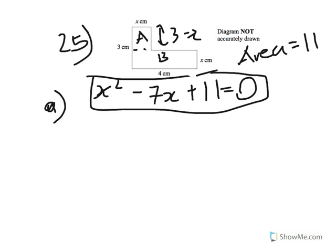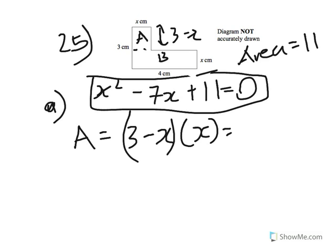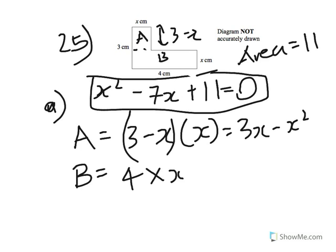The area of rectangle A is length times width, so it's (3 minus x) times x, which equals 3x minus x squared. The area of rectangle B is length times width: 4 times x, which equals 4x. Now A plus B should give us the total area of the shape.